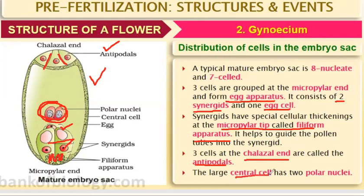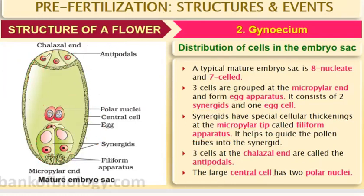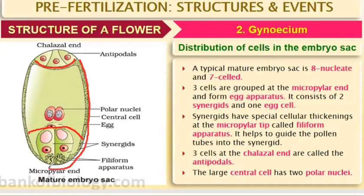The large central cell has two polar nuclei. So we have three antipodal cells at the chalazal end, one large central cell with two polar nuclei in the middle, and the egg apparatus (two synergids and one egg cell) at the micropylar end. Some books count this as seven cells; others count differently depending on whether they treat the central cell separately. According to NCERT, the mature female gametophyte is seven-celled and eight-nucleated.